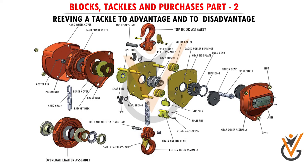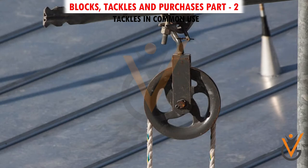Raving a tackle to advantage and to disadvantage: the number of parts at the moving block, and therefore the mechanical advantage, is always greater when the hauling part comes away from the moving block — such a tackle is said to be rove to advantage. Conversely, a tackle in which the hauling part comes away from the standing block is said to be rove to disadvantage. Where practicable, always rig the tackle so that the hauling part leads from the moving block.